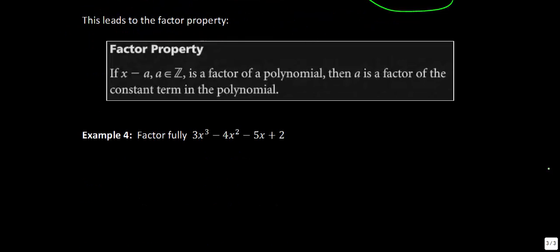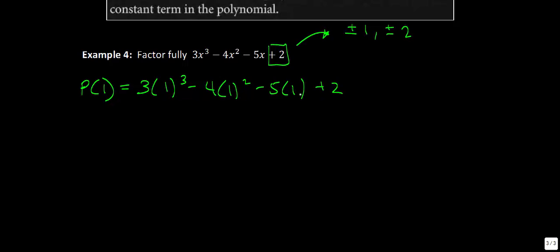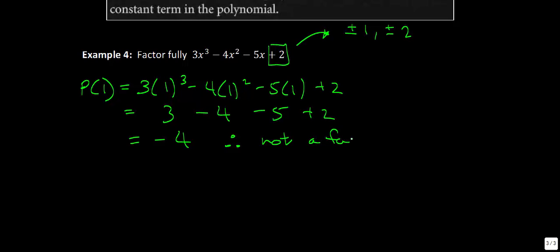In the next example, we focus on the constant term, positive 2. The factors of 2 are plus or minus 1 and plus or minus 2 — these are the values we should try. Let's start with positive 1: substituting p(1) gives 3 times 1 cubed minus 4 times 1 squared minus 5 times 1 plus 2, which simplifies to 3 minus 4 minus 5 plus 2, giving negative 4. So x minus 1 is not a factor.